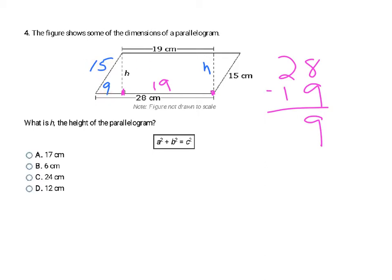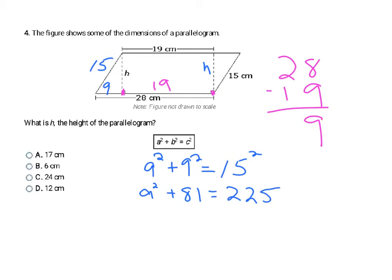I can use Pythagorean Theorem: A squared plus 9 squared equals 15 squared. The side across from the right angle is 15, my hypotenuse. Squaring each: 9 squared is 81, and 15 squared is 225. To continue solving for the leg, I subtract 81 from both sides — the 81s cancel — and I'm left with A squared equals 225 minus 81, which is 144.